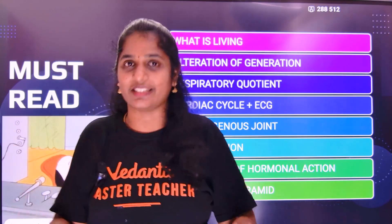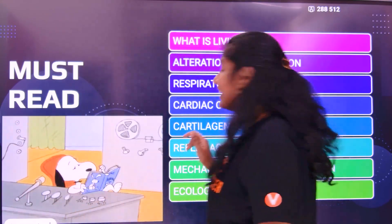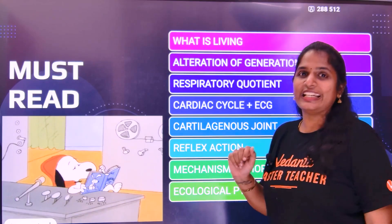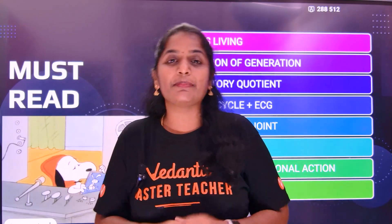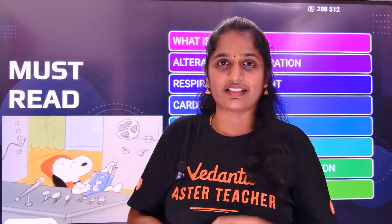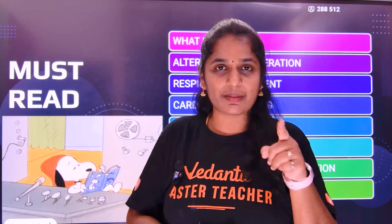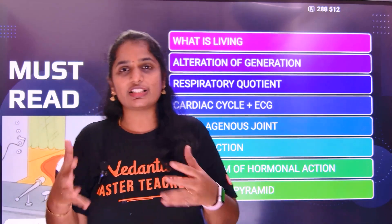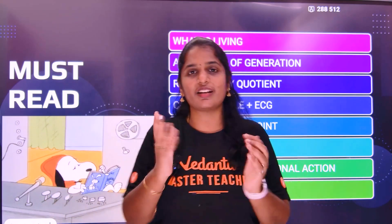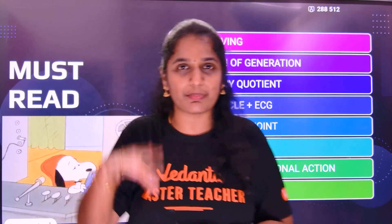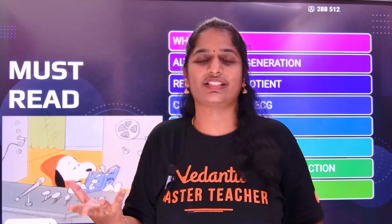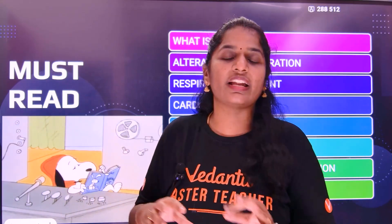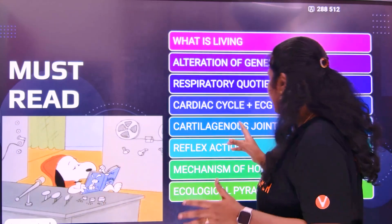These are the cartilaginous joints. Pubic symphysis is a cartilaginous joint. There is a cartilaginous joint with the sternum — ribs and sternum. Intervertebral disc is a cartilaginous joint. This is very important.